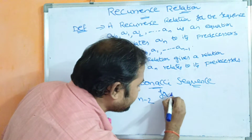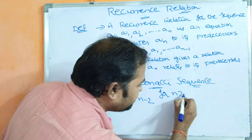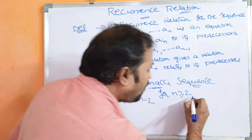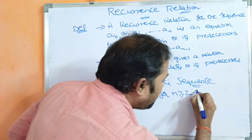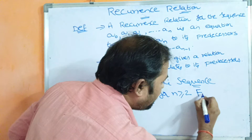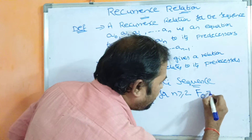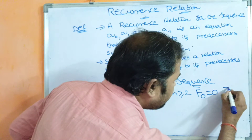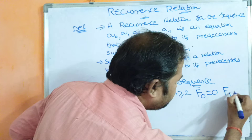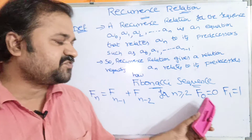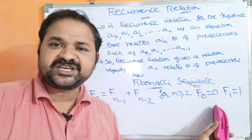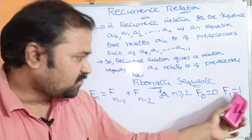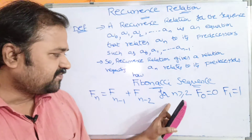This holds for n greater than or equal to 2. The initial values are F0 = 0 and F1 = 1. So the first Fibonacci number is 0 and the second Fibonacci number is 1.